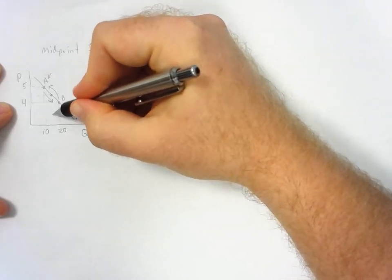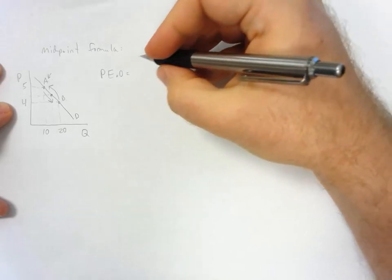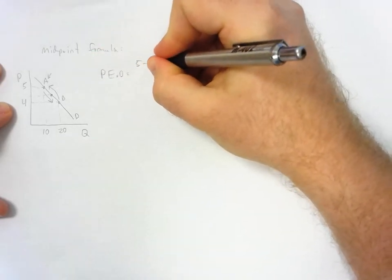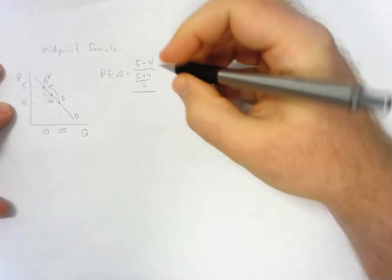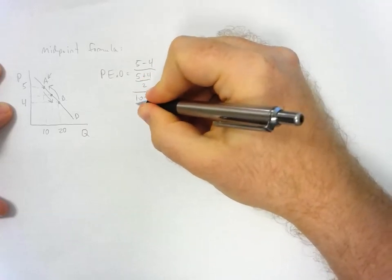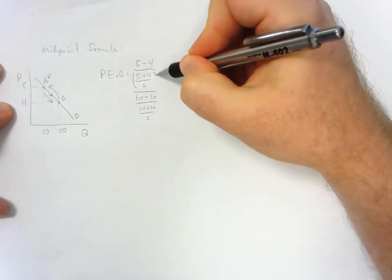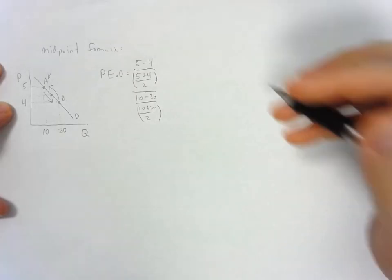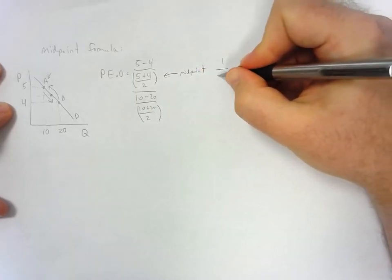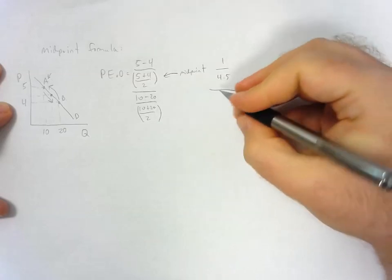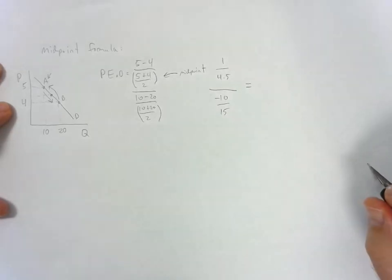When we calculate the price elasticity of demand moving from point A to point B, we get: (5 − 4) / ((5 + 4) / 2) divided by (10 − 20) / ((10 + 20) / 2). This is where the midpoint formula comes into play — the denominators use the average of the two points. That gives us 1 / 4.5 divided by −10 / 15.